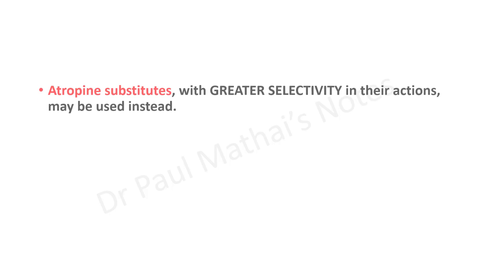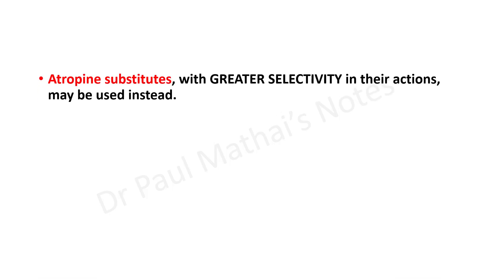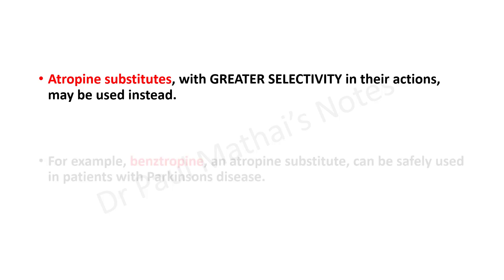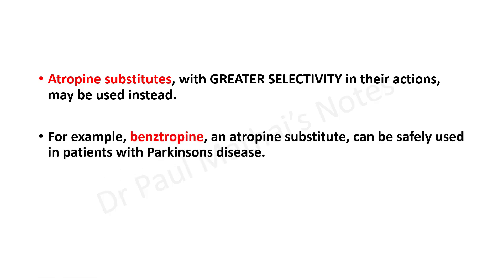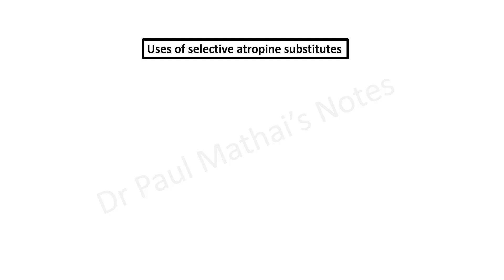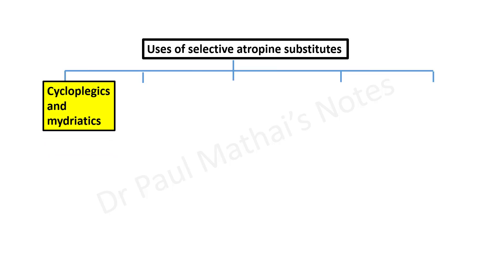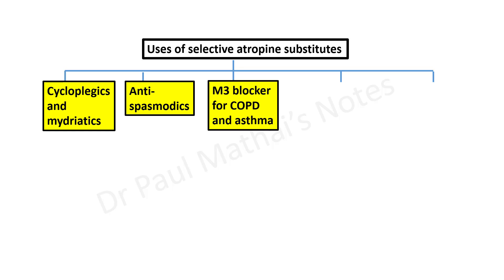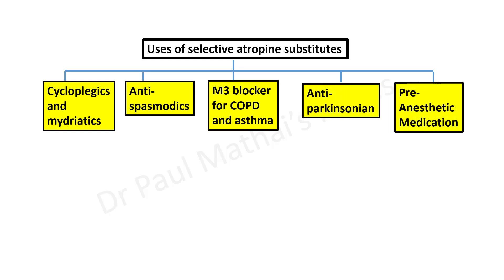On the other hand, there are atropine substitutes with greater selectivity. For example, benztropine, which is an atropine substitute, can be used in patients with drug-induced Parkinson's disease. Benztropine is far more selective in its actions compared to atropine. The uses of selective atropine substitutes include cycloplegics and mydriatics, antispasmodic drugs, M3 blockers for COPD and asthma, anti-Parkinsonian drugs, and pre-anesthetic medication.